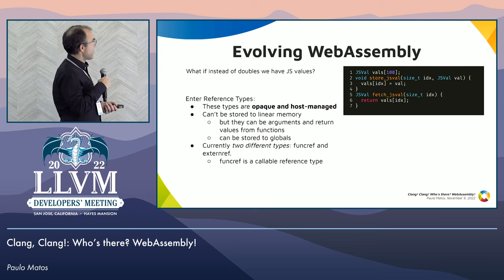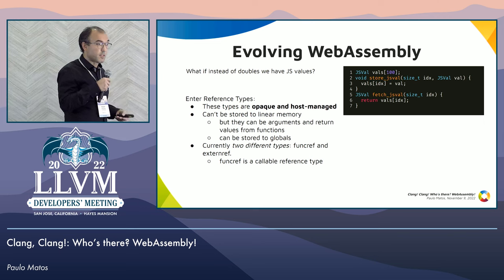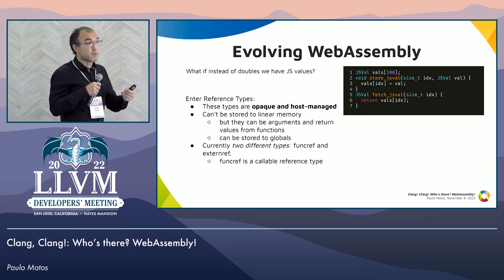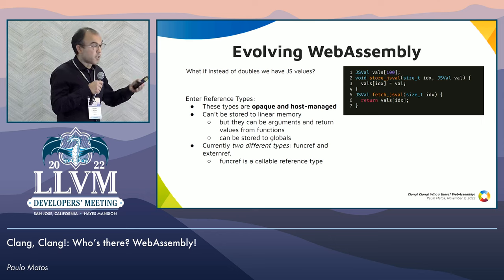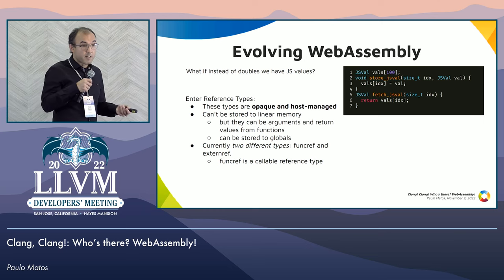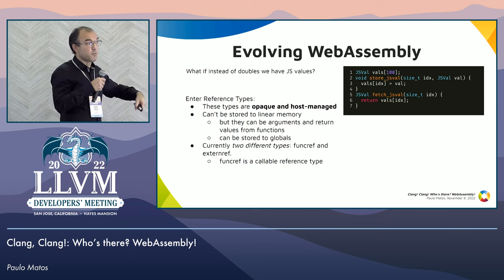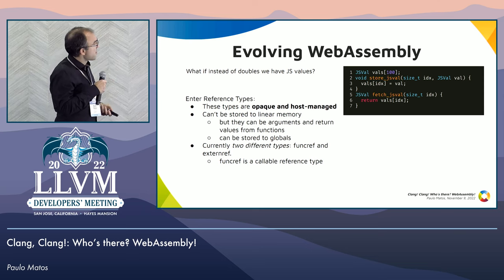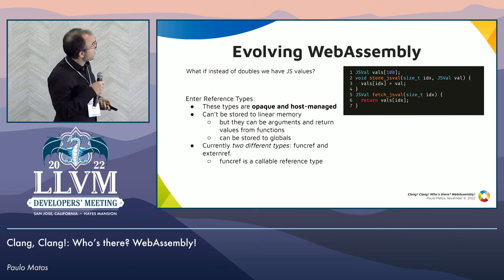Reference types are interesting. First, they are opaque and host-managed. Even though they can be arguments and return values of functions, and can be stored to globals, they cannot be stored to linear memory, because they don't have a bit representation in memory like an integer or a float. There are two types: external ref, which is completely opaque and you cannot do anything with it, and func ref, which is an opaque reference to a function in the host system where the only thing you can do from the WebAssembly side is call it. So code storing JSVals to linear memory won't work.